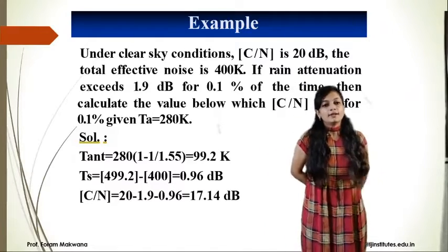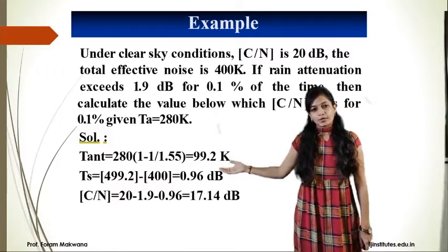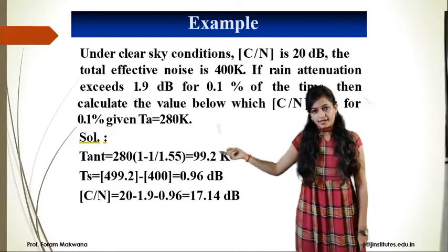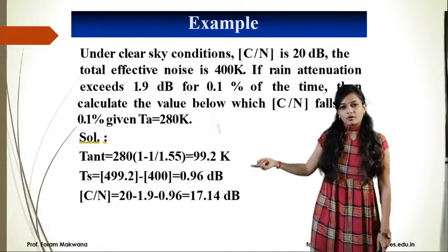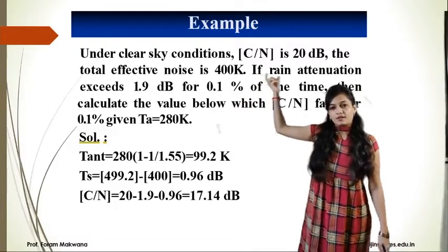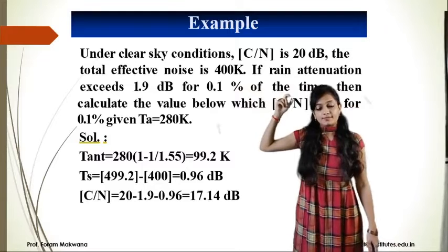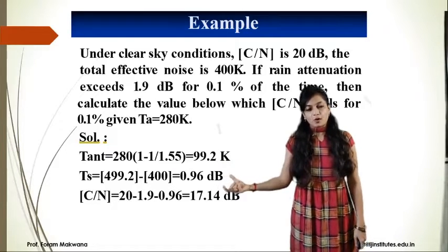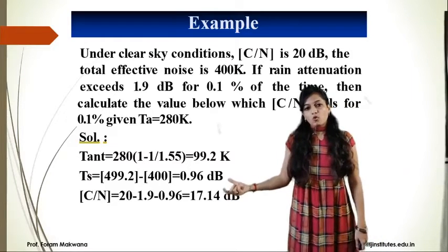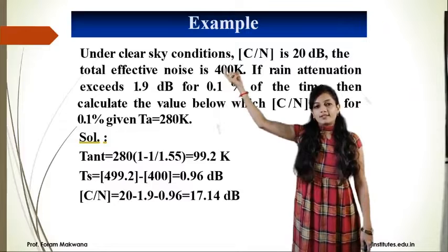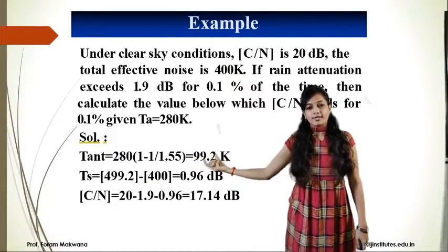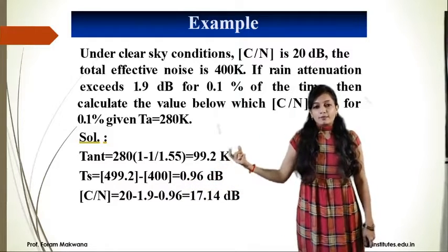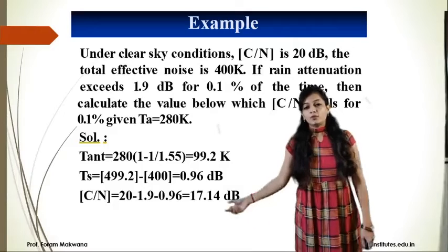First, calculate antenna temperature. T_rain = T_A × (1 − 1/1.55). The 1.9 dB rain attenuation converted to absolute value gives 1.55. So T_rain = 99.2 Kelvin. Then system temperature T_sys = 400 + 99.2 = 499.2 K. Converting the difference from 400 to 499.2 K into dB, we get 0.96 dB.